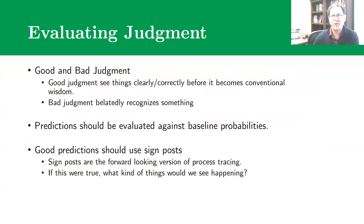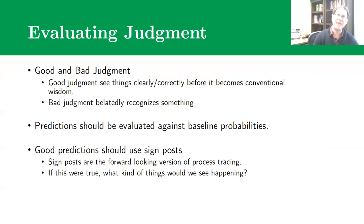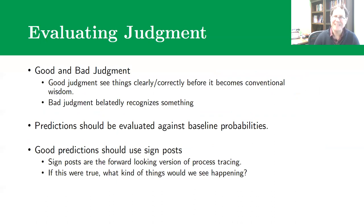When thinking about judgment and predictions and what makes something a good judgment versus a bad judgment, Tetlock makes a really useful distinction. Good judgment is being able to see things correctly and clearly, and to do that before it becomes conventional wisdom. Good judgment implies you are on the cutting edge of seeing trends and patterns, whereas bad judgment means you belatedly recognize reality — you belatedly come around to what everyone else has realized, which is a sign you're not doing a good job forming a realistic picture about the world.